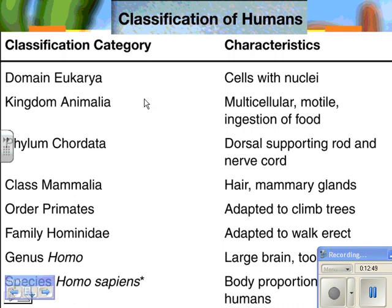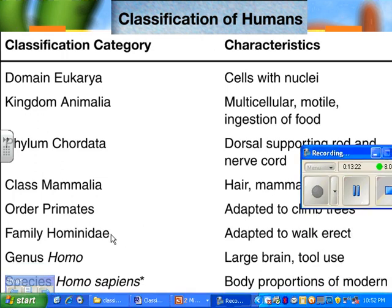Here's the classification of humans. Your domain is Eukaryote — you have a nucleus and membrane-bound organelles. You are an animal — multicellular, you can move, and you eat stuff. You are a chordate — you have a brain and a spinal cord. You are a mammal — you have hair, and if you are a girl, you have mammary glands. You are a primate, generally adapted to climb trees. You are in the family Hominidae, adapted to walk upright. Your genus is Homo — large brain and tool use — and your species is Homo sapiens.